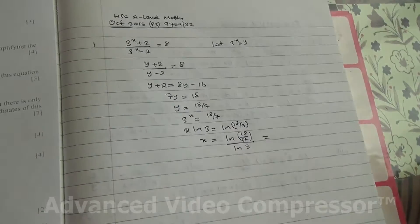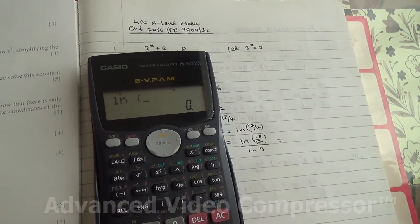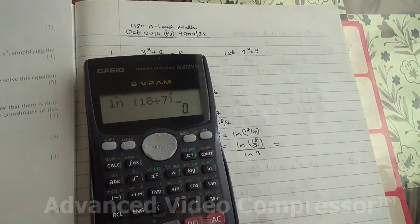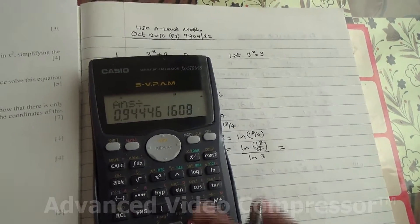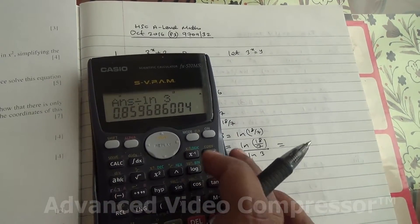So let's do that. I want to calculate it here. So ln brackets 18 over 7 divided by ln 3. So the answer is 0.8596.